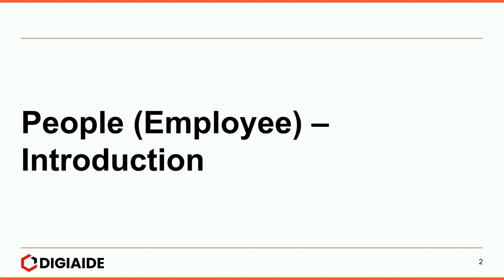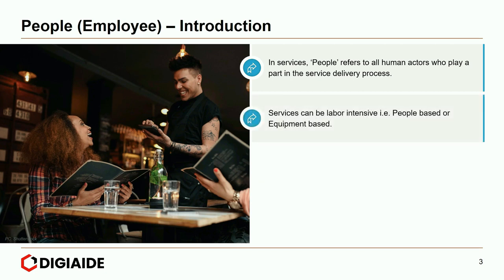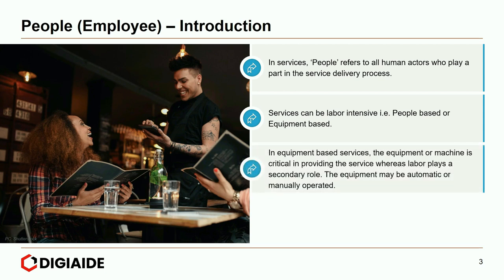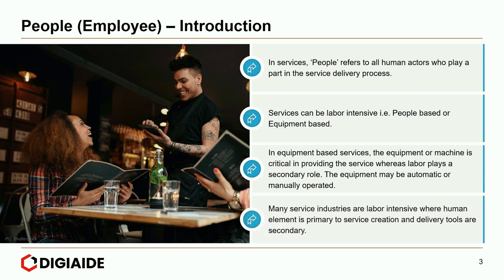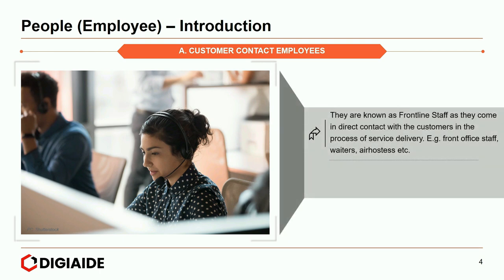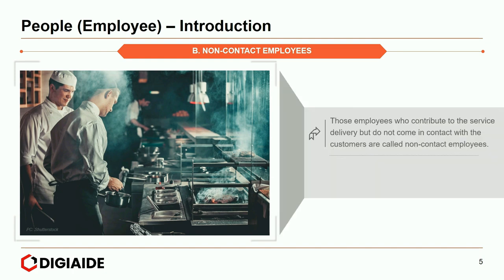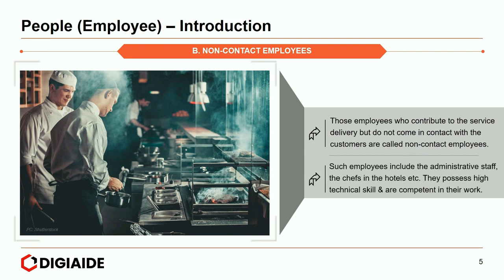Let's start with people as employees and the introduction. In services, people refers to all human actors who play a part in the service delivery process. Service can be labor intensive — people-based or equipment-based. In equipment-based services, the equipment or machine is critical in providing the service, whereas labor plays a secondary role. Many service industries are labor intensive, where the human element is primary. Now let's look at the types of employees. First, customer contact employees — known as frontline staff as they come in direct contact with customers. For example, front-of-house staff, waiters and air hostesses. These contact employees are very important because they represent the organization and can directly influence customer satisfaction. Next, non-contact employees — those who contribute to service delivery but do not come in contact with customers, such as administrative staff and chefs in a hotel. They might possess high technical skill and are competent in their work.